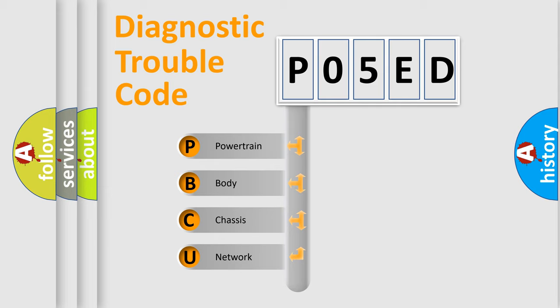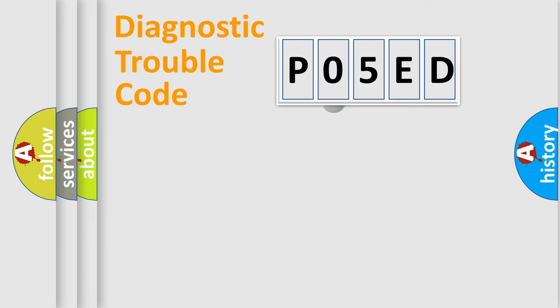We divide the electric system of automobile into four basic units: Powertrain, Body, Chassis, and Network. This distribution is defined in the first character code.